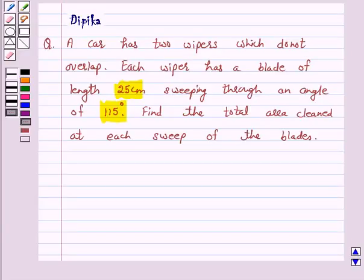Hello and welcome to the session. I am Deepika here. Let's discuss a question which says a car has two wipers which do not overlap. Each wiper has a blade of length 25 cm sweeping through an angle of 115 degree. Find the total area cleaned at each sweep of the blades.